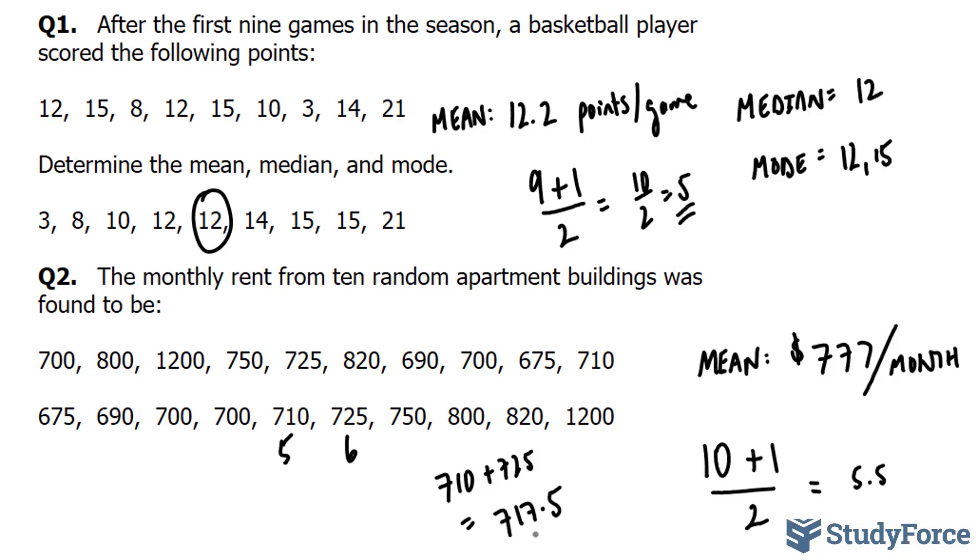So $717 is the median cost for renting an apartment. Don't forget the dollar symbol. And lastly, they are asking us to find the mode, which is the number that's most repeating. This number right here, 700, looks to be that particular number. So our mode is $700.